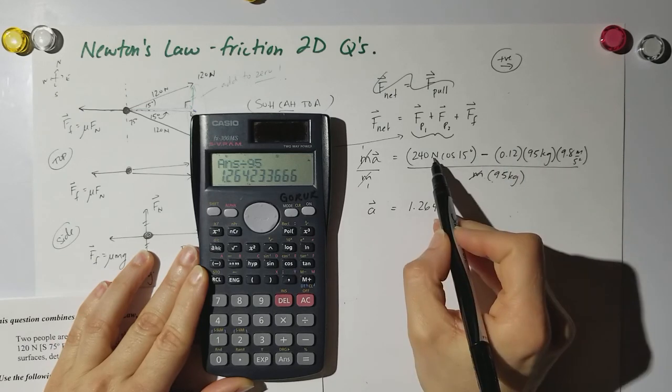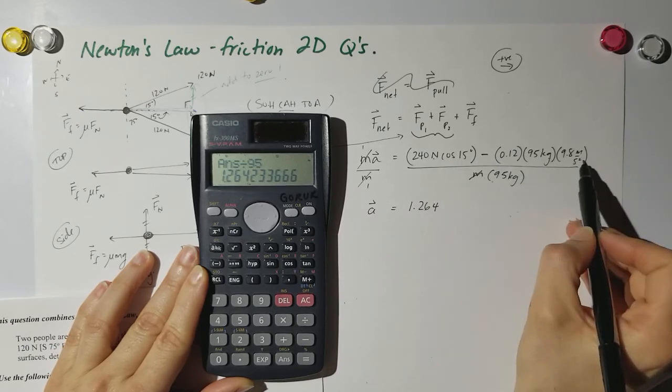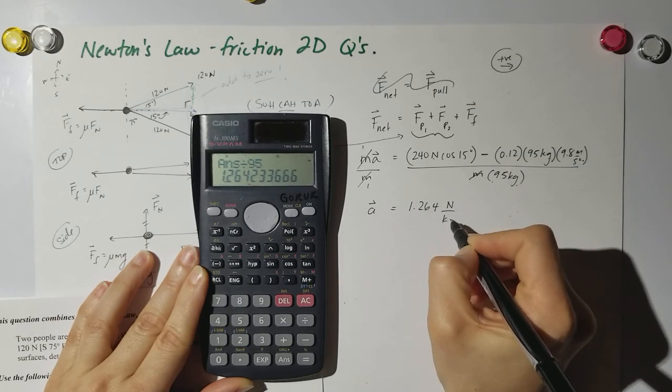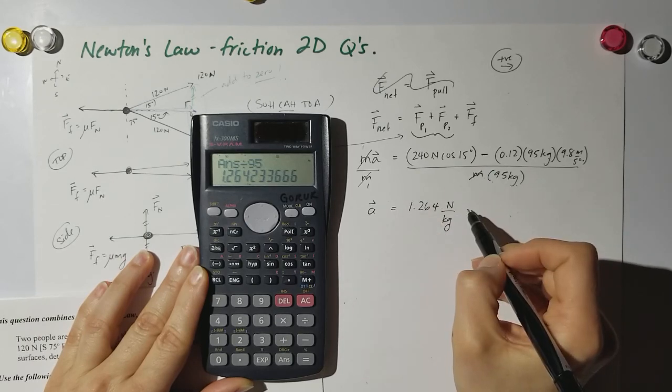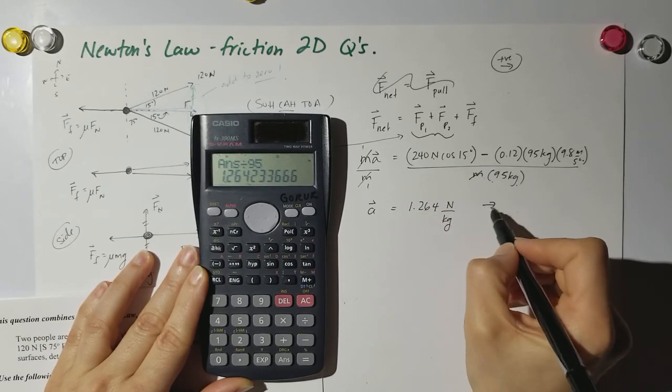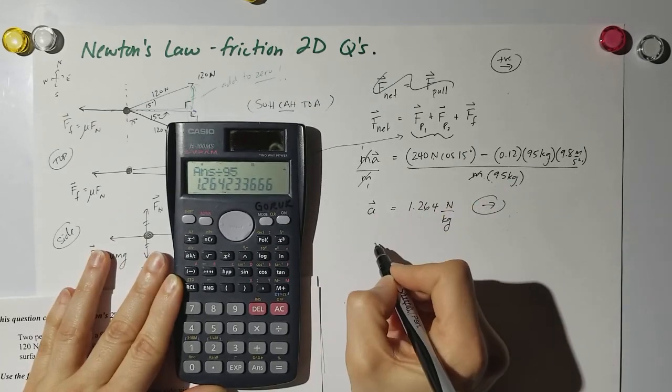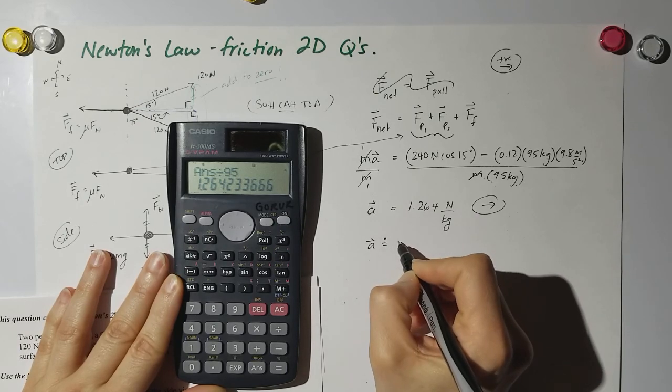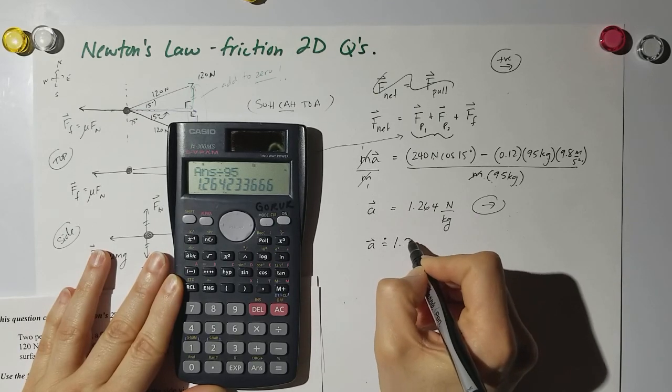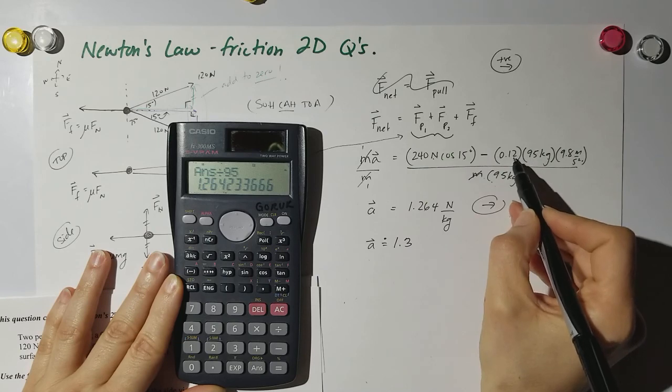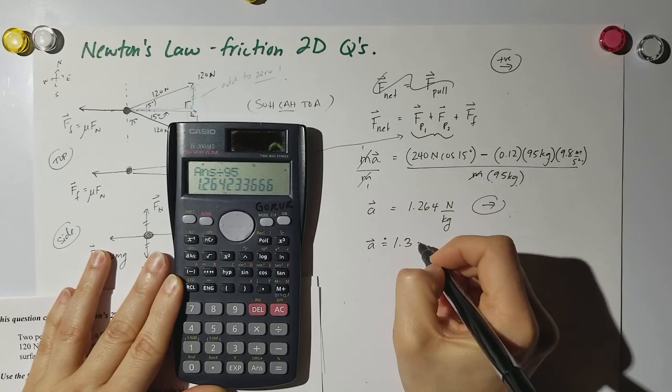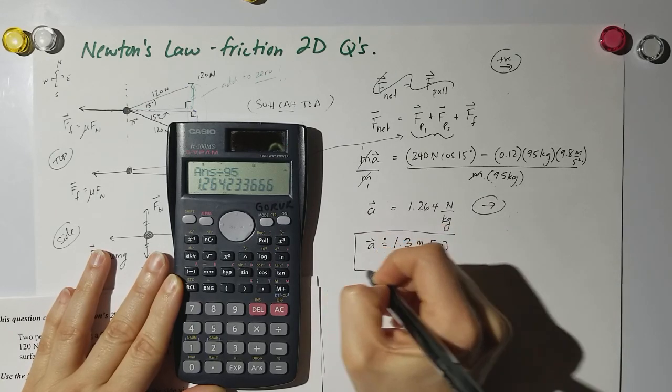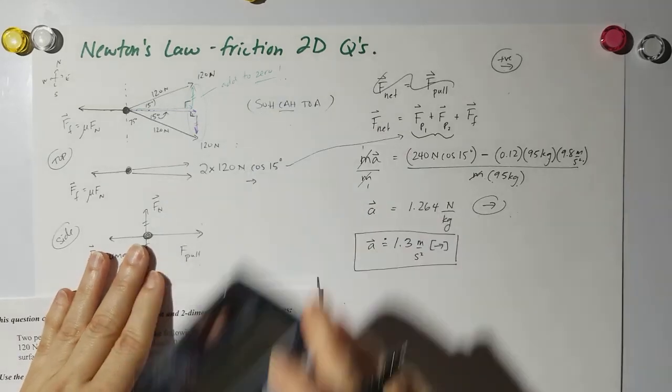I didn't put any units in here initially, but this is newtons and this is kilogram meters per second squared, so that's newtons, but then I divided by a kilogram. This came out to be a positive value, so that means it is to the right. My final answer is approximately 1.3 meters per second squared to the right. There's my final answer to this question.